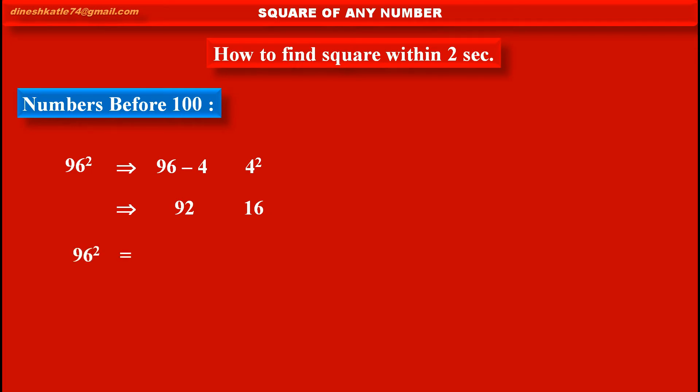So, 96 square is equal to... in second part, we want two digit number. And here, 16 is a two digit number. So, no need to carry any extra digit here, in this case.